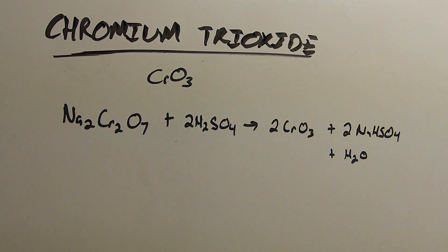Chromium trioxide is the acid anhydride of chromic acid. It's a fairly strong acid and it's a highly oxidizing acid. It's also useful for cleaning glassware as I'll get to later.